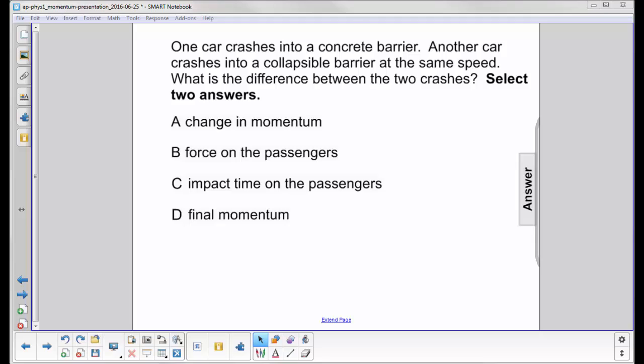One car crashes into a concrete barrier. Another car crashes into a collapsible barrier at the same speed. The collapsible barrier could be made out of big containers full of water or sand, or just very bouncy metal that acts like a spring.